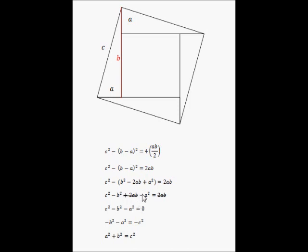Notice that on the right hand side we've got an equivalent term, 2ab, on both sides. So if we take away those two terms, we end up with this. c squared minus b squared minus a squared equals 0.